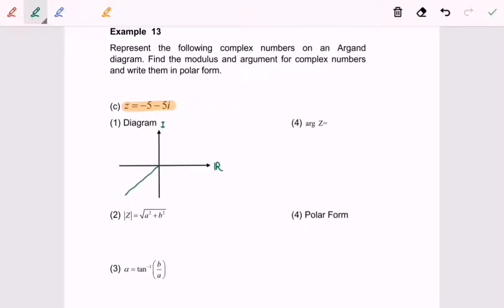Step number two, we are going to find the modulus of z. In this case, modulus of z is equal to square root of 25 plus 25, and we will have square root of 50. If we simplify, our modulus of z will be equal to square root of 25 multiply with square root of 2, and finally we have 5 square root of 2.